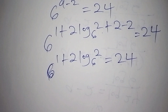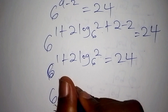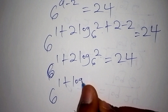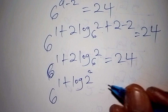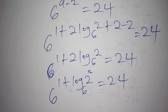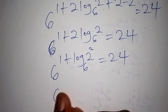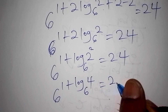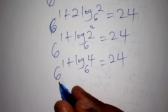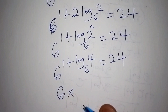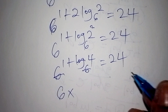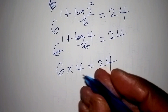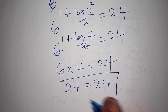We can rewrite 2·log₆2 as log₆(2²), which is log₆4. So we have 6 to the power of 1 plus log₆4, which equals 24. Applying the exponent rule, 6 to the power of 1 is 6, and the log base 6 and the base 6 cancel, giving multiplication by 4. So 6 times 4 equals 24, which confirms our answer is correct.